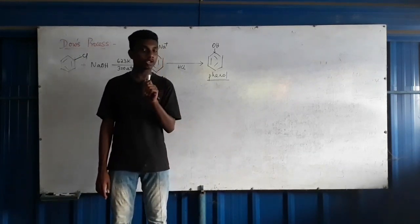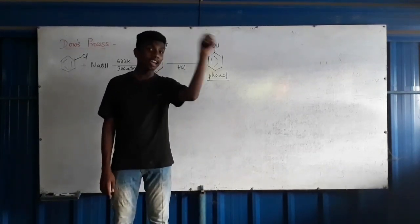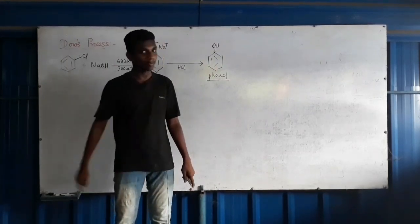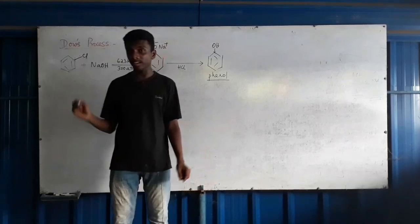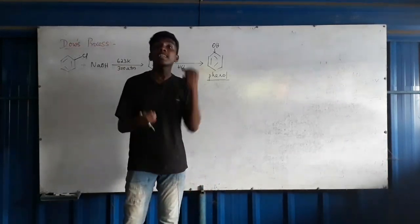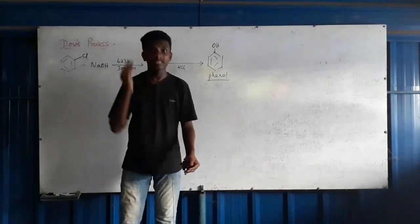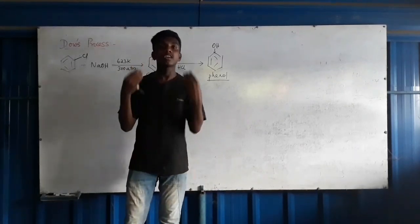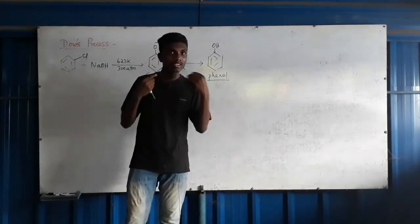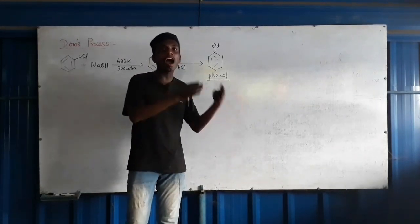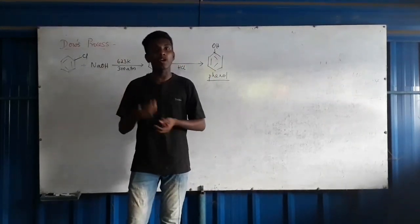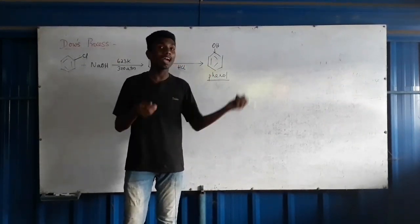In the Finkelstein Reaction, dry acetone is the solvent. In the Swarts Reaction, heat is applied. The equation for Swarts is: RX + metallic fluoride (AgF, CoF2, SbF3, or Hg2F2) with heat → RF + corresponding metallic halide.